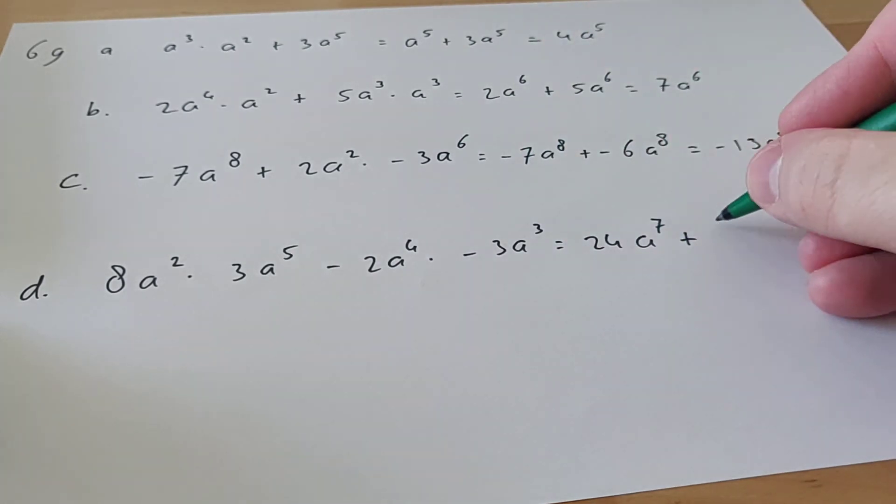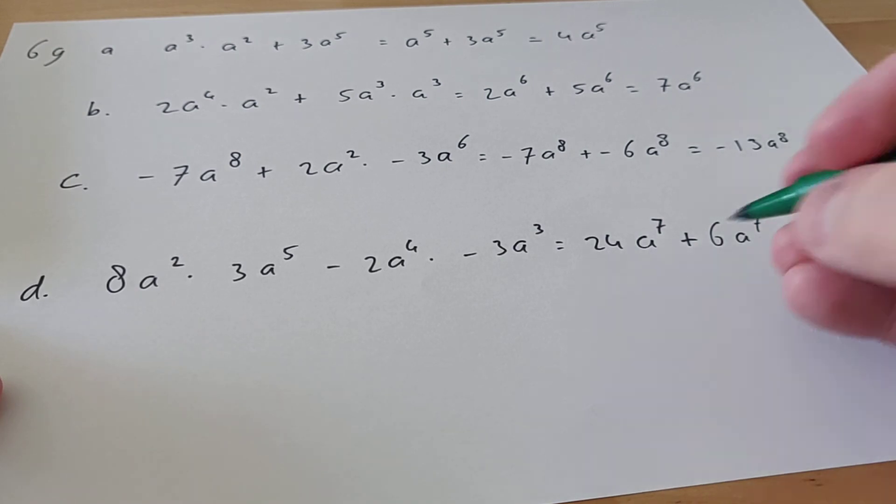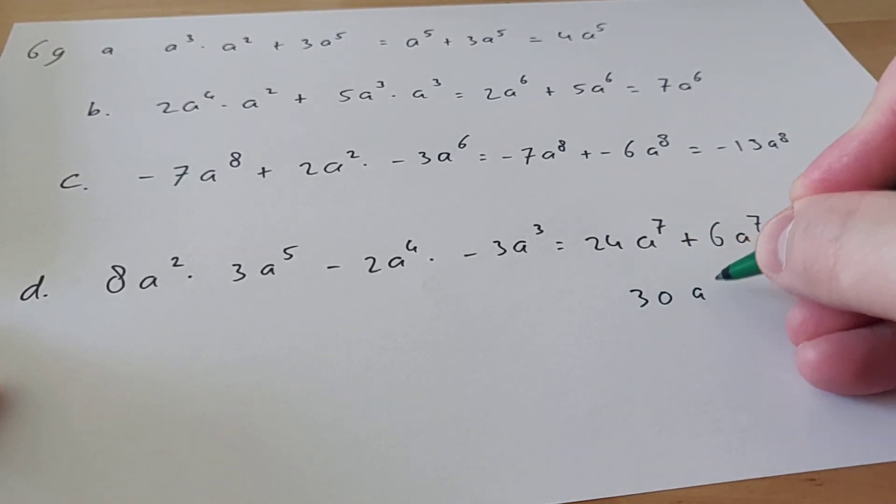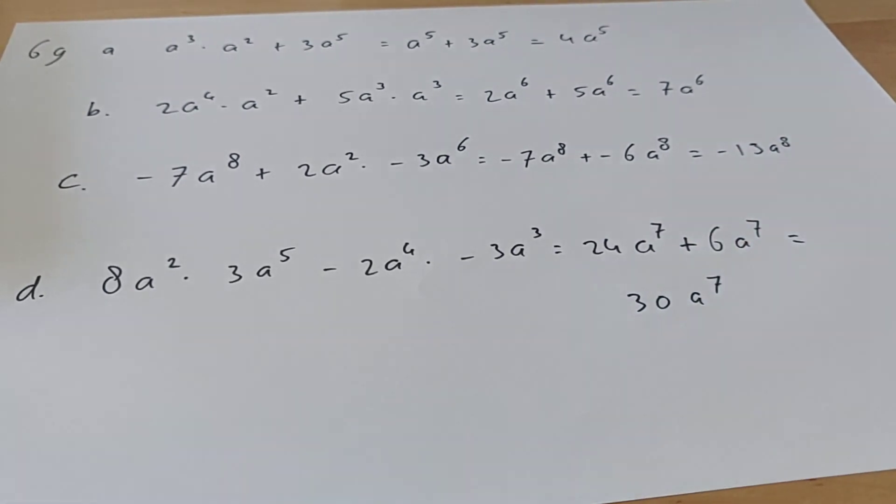And 3 times 2 is 6, or 2 times 3, like that. And then a^7, so 24 plus 6 is 30a^7.